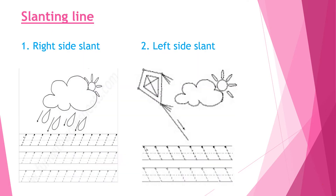So children, starting with the slanting line. There are two types of slanting line: first is right side slanting line, and second one is left side slanting line. So let's start with right side slanting line.